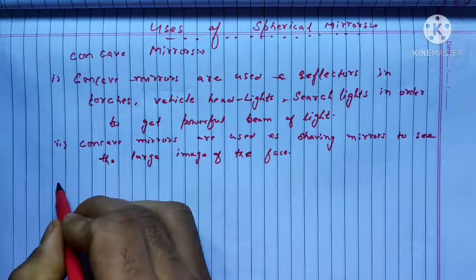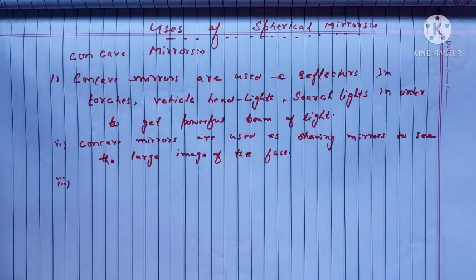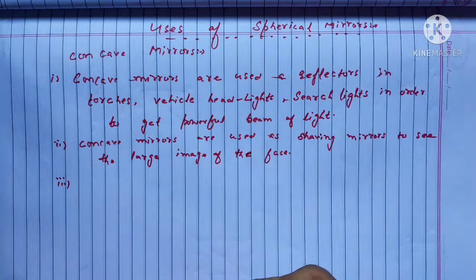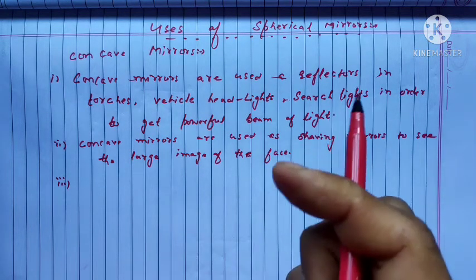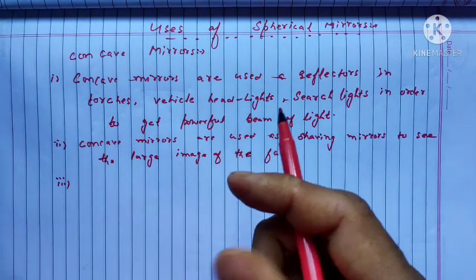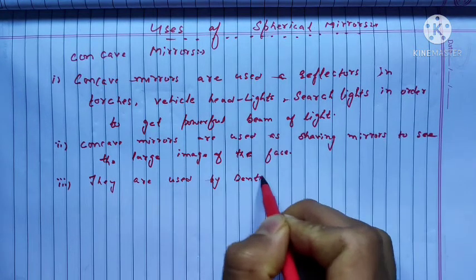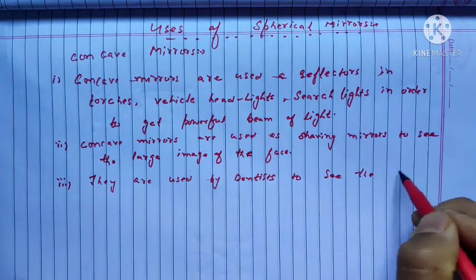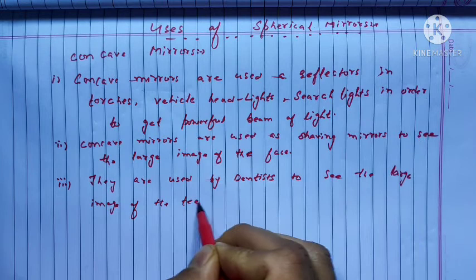A third use of concave mirrors is that they are used by dentists to see a large image of the teeth. When we go to the dentist, they place a small concave mirror inside the mouth. Because any cavity, disorder, or disease in the teeth is very difficult to see directly, so the dentist uses a concave mirror to enlarge the image so they can identify the problem.